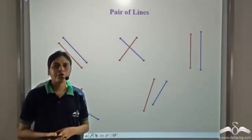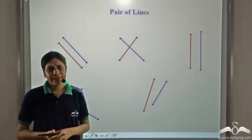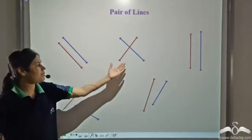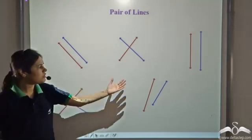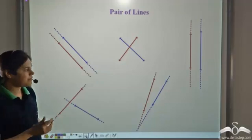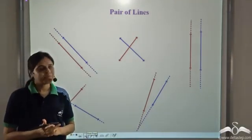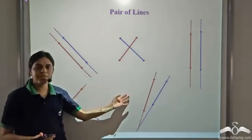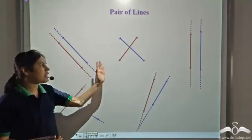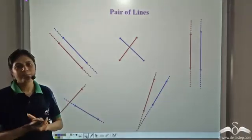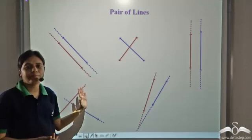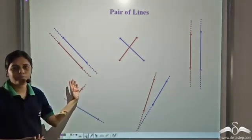Let us draw two lines or a pair of lines. There can be a lot of ways of drawing two lines, some of them drawn here on the board. But if we extend them, there are only two possibilities: either the lines will meet or they will not meet. So, although there are many ways of drawing these lines, there are only two possibilities when we extend them — either they meet or they do not meet.